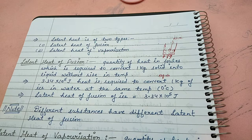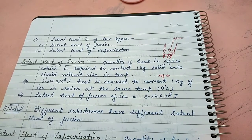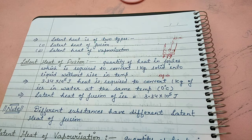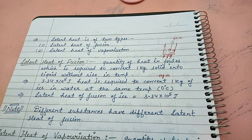The latent heat of fusion for ice or water is 3.34 × 10⁵ joules per kg. Until the state change is complete, temperature does not increase, because all the energy is being used to overcome the force of attraction between the particles. The latent heat of fusion depends on the force of attraction — if the force of attraction is stronger, we need more latent heat of fusion to overcome it. So the latent heat of fusion is different for different substances.